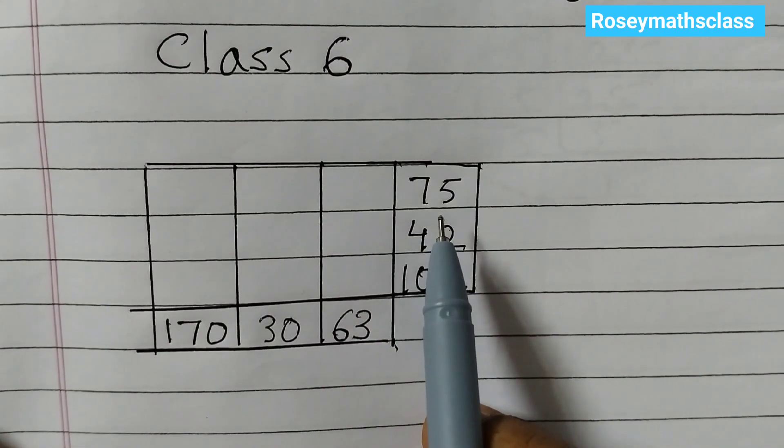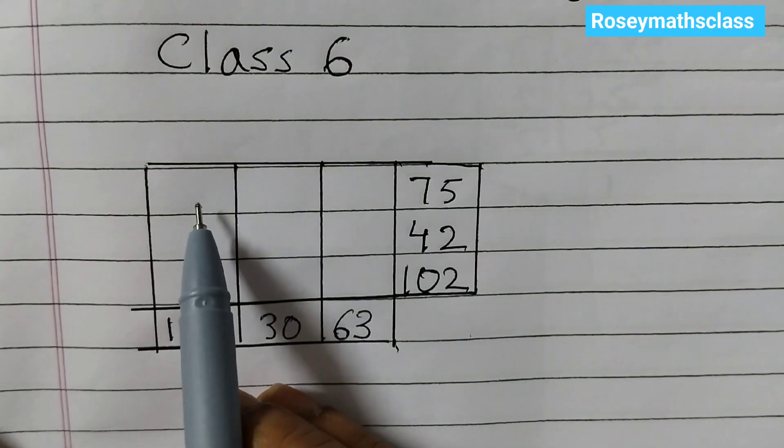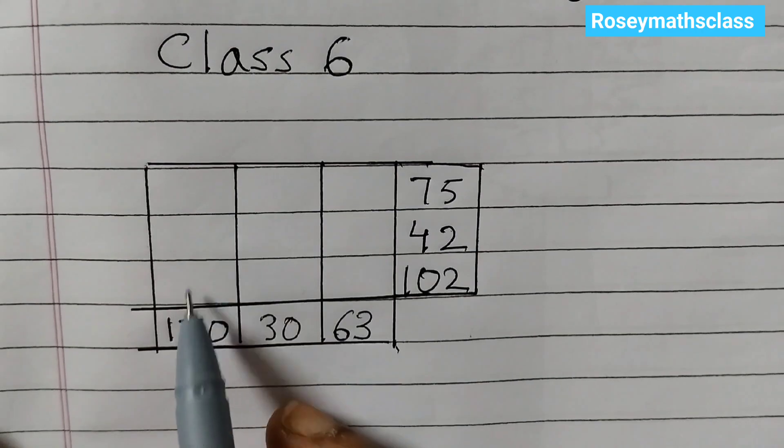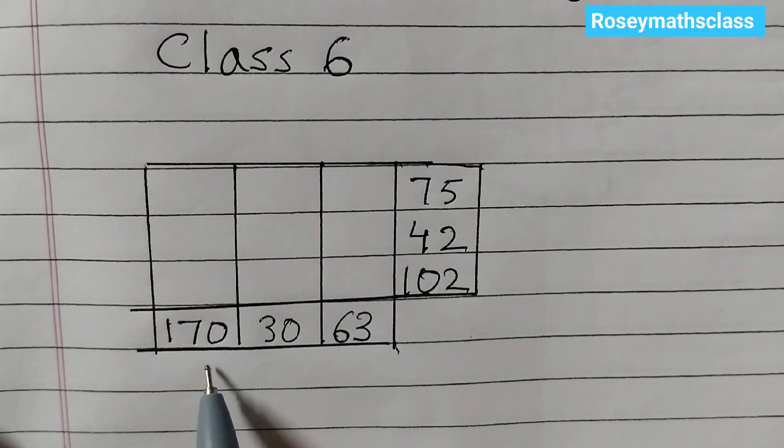Similarly here, whatever we fill up in these three places, when we multiply these three numbers we must get 170, and all these numbers must be prime numbers, prime numbers like 2, 3, 5, 7.